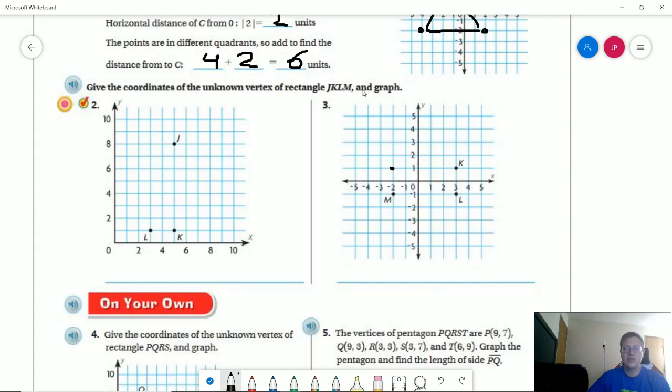And so that would give us J being equal to negative 2, 1.